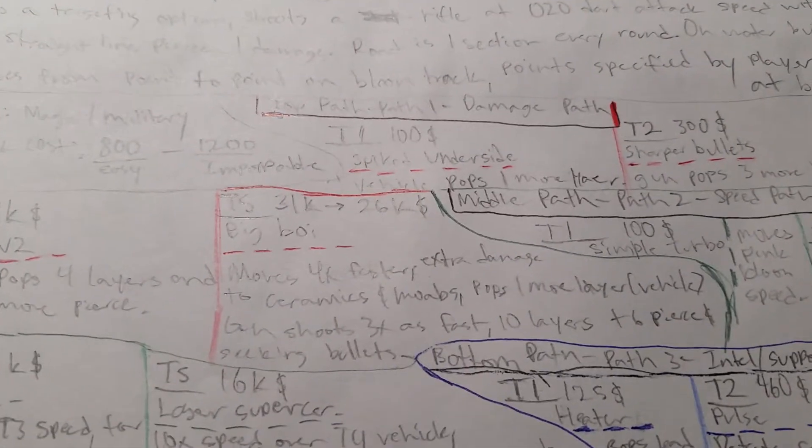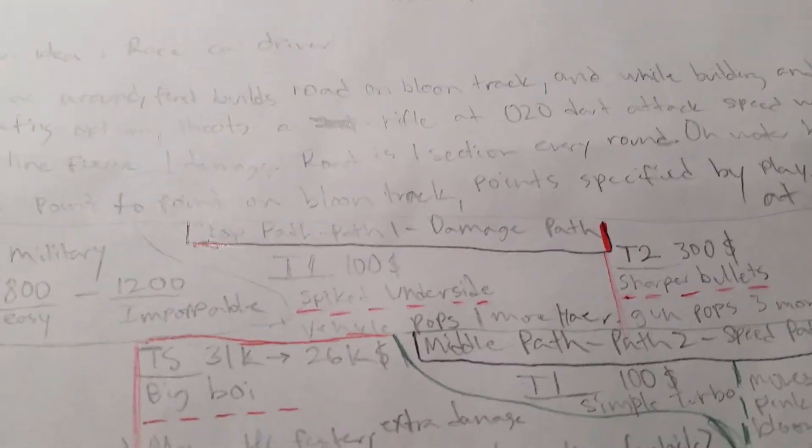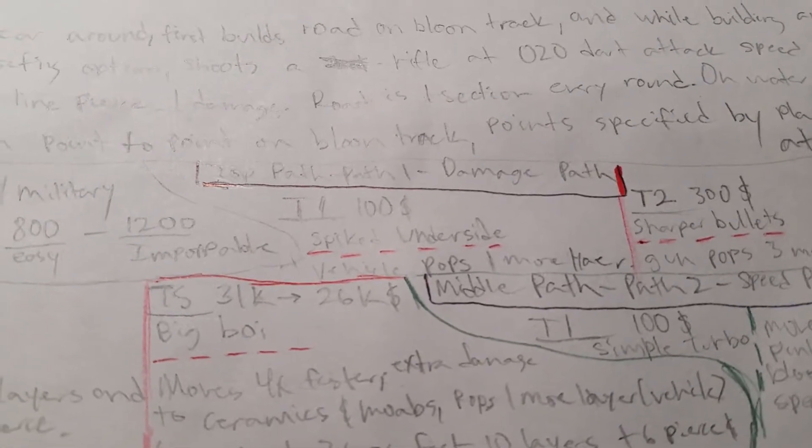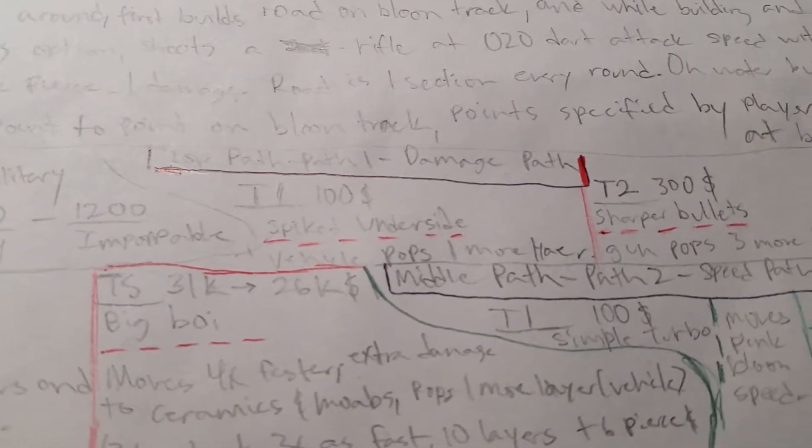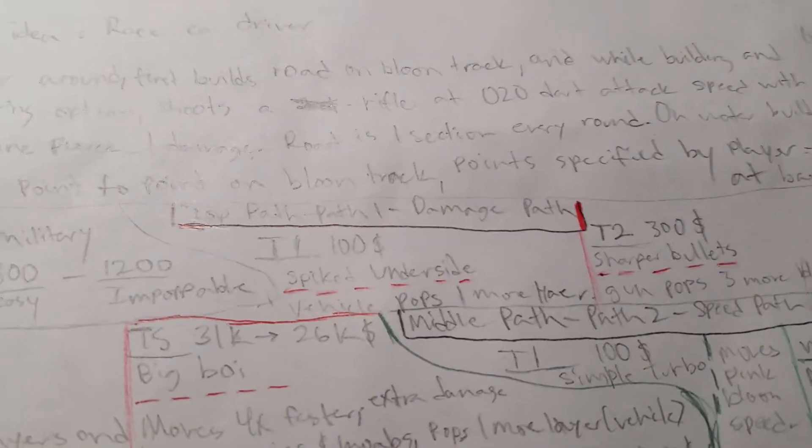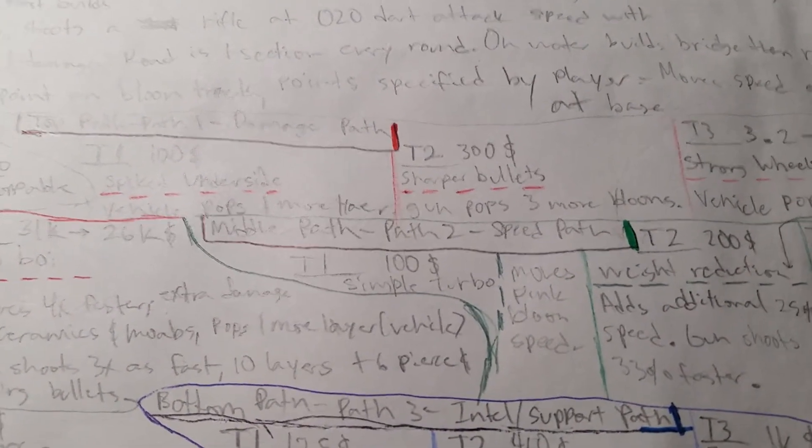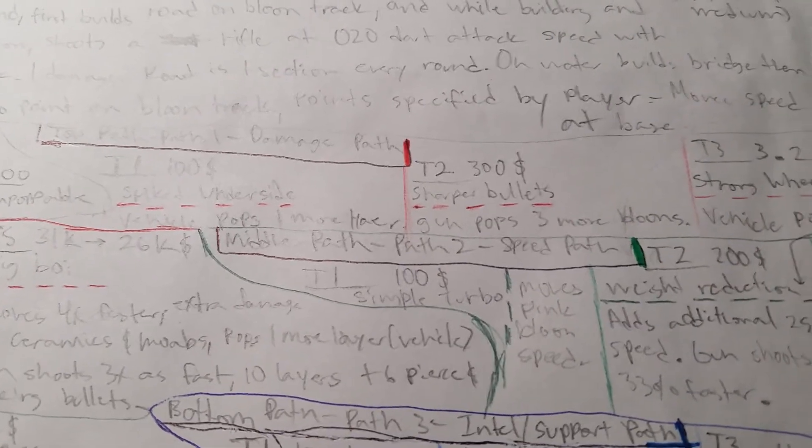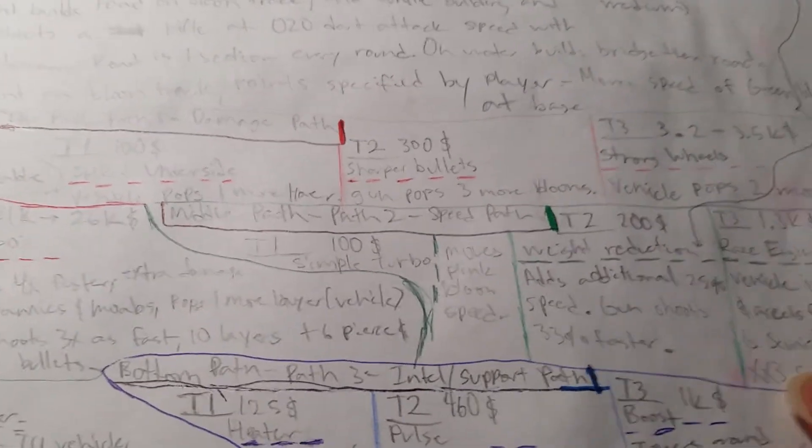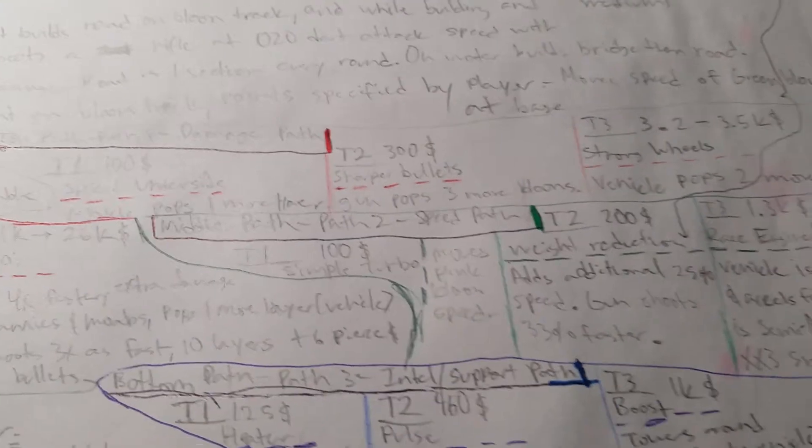So the first path, the damage path or the top path, would be tier 1, 100 dollars, spiked underside. This adds spikes to the underside of the vehicle, so vehicle pops one more layer. Tier 2, 200 or 300 dollars, is sharper or bigger bullets, so the gun has three more pierce, from 5 to 8.